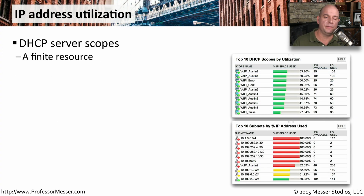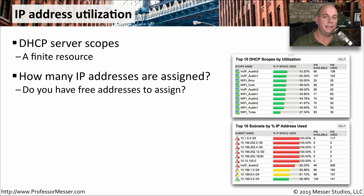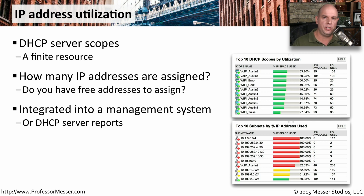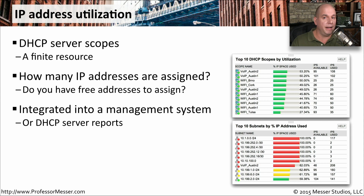From a networking perspective, another important piece of documentation is associated with your IP addresses. If you have a large organization, you may have a number of DHCP servers, and it's important that everybody is able to get an IP address when they connect to the network. With IP address utilization reports, you're able to understand the scopes and how they're being used. How many IP addresses have been assigned, what are those devices, and do you have more addresses in the pool? This is usually integrated into your management system or specialized DHCP software.